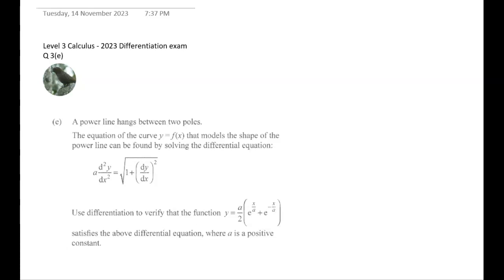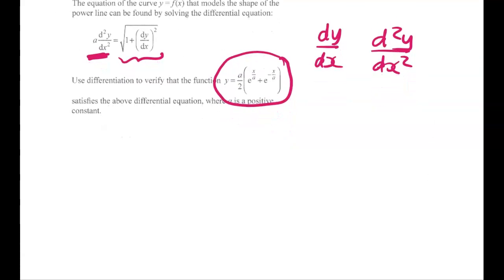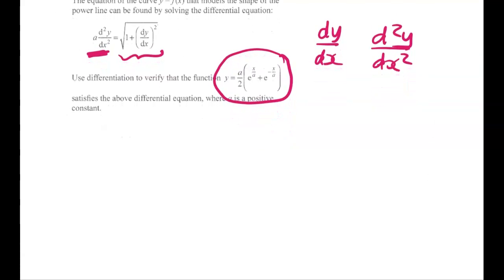It's really an algebra question once you've done some very kind of merit level differentiation. We're going to start with this function, and we're going to find dy by dx, and then we're going to find the second derivative as well. We're going to manipulate those and show that when we get a times the second derivative, that ends up being the same as this thing on this side. It's really important to go quite slowly with this. It's a show that question, a verify question.